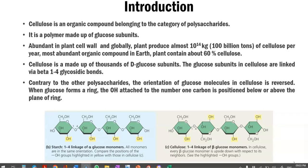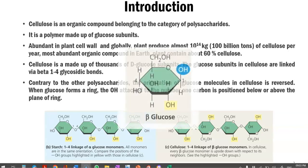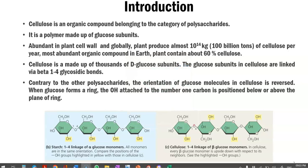Cellulose is made up of thousands of D-glucose subunits. The glucose subunits in cellulose are linked via beta 1,4 glycosidic linkages. Contrary to other polysaccharides, the orientation of the glucose molecule in cellulose is reversed — that is, when glucose forms into a ring, the OH group attached to carbon number one is positioned below or above the plane of the ring.